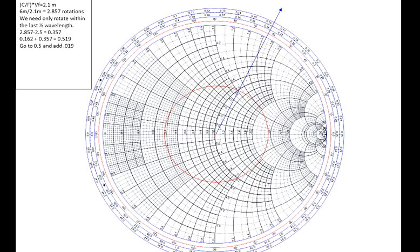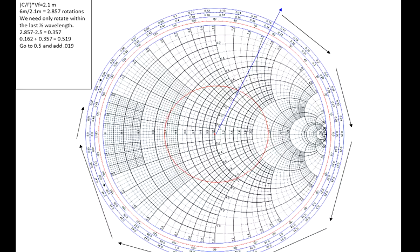That value is less than 0.5. We take our reference of 0.162 that the blue line scribes through, add our calculated 0.357, and find that we must move to a position of 0.519 on the Smith chart. Since the Smith chart is only scaled to 0.5, we go 0.019 beyond the 0.5 point. Following the arrows clockwise brings us to that point. We then scribe a line from the center of the Smith chart out to 0.019 past 0.5, and where that blue line intercepts the impedance circle, that defines the impedance looking into the transmission line.